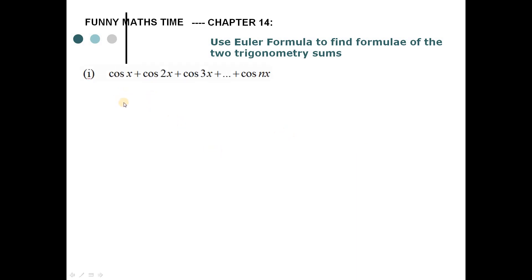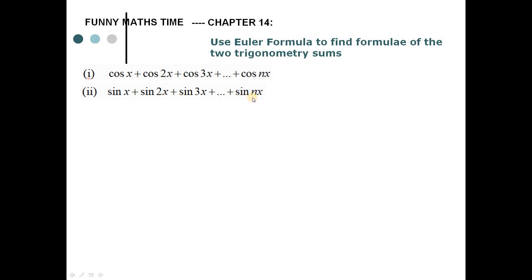For the first sum, it is cos x plus cos 2x plus cos 3x, and so on, plus cos nx. The angle here is in the format of an arithmetic sequence, so I call this the cosine arithmetic sequence sum. The other trigonometry sum is sin x plus sin 2x plus sin 3x, and so on, plus sin nx.